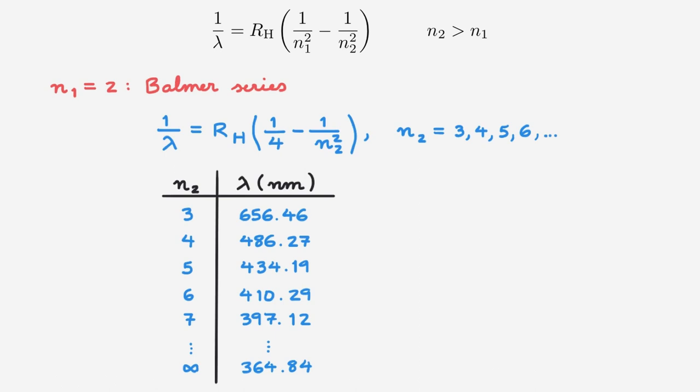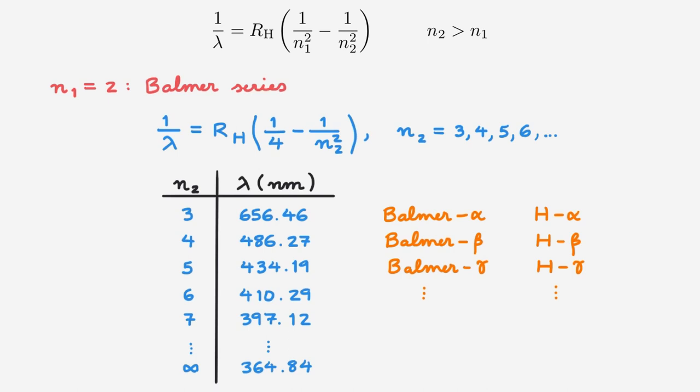Drawing a table for the Balmer series: N2 equals 3 gives 656.46 nanometers; N2 equals 4 gives 486.27 nanometers; N2 equals 5 gives 434.19 nanometers; N2 equals 6 gives 410.29 nanometers; N2 equals 7 gives 397.12 nanometers. And eventually in the limit of very large N2, the wavelength tends to 364.84 nanometers. Each of these transitions corresponds to a spectral line and they together form the Balmer series. The Balmer series is sometimes also labelled by the chemical symbol for hydrogen, so the first line would be H alpha, the second H beta, then H gamma, and so on.